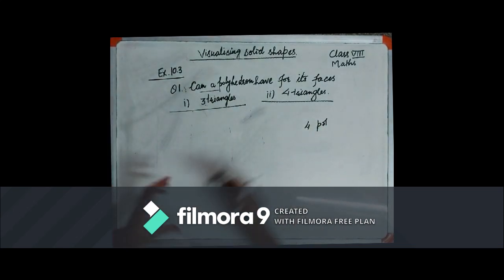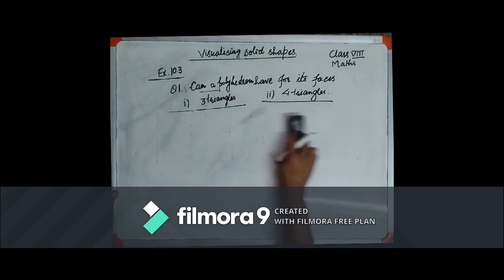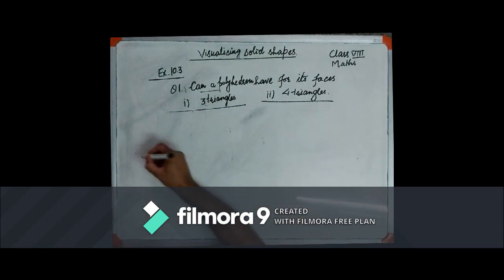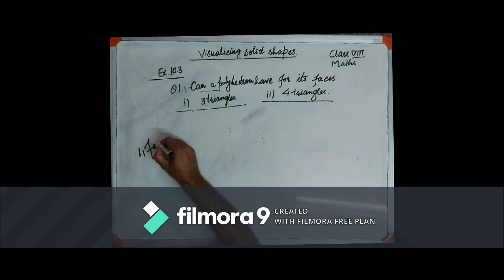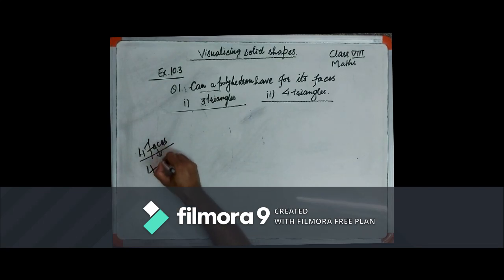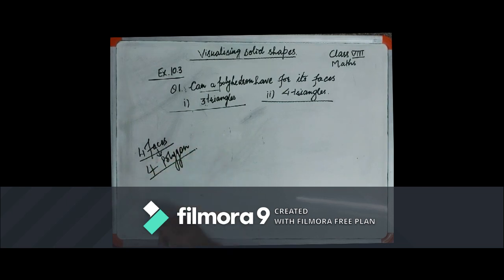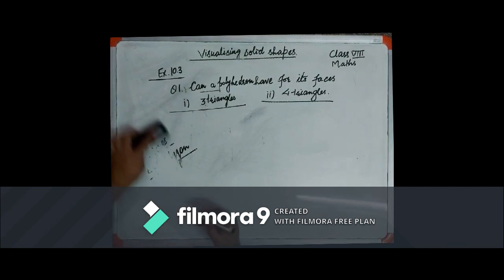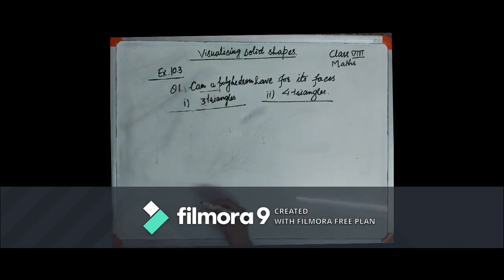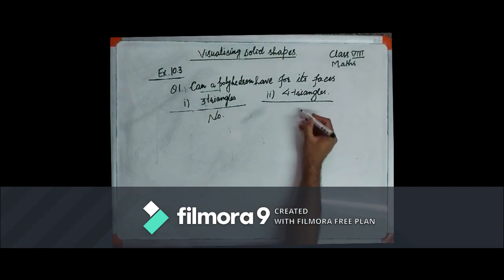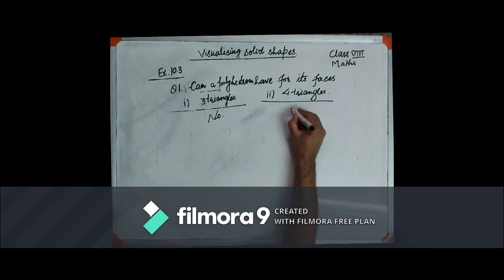First of all, we must understand that to create any polyhedron, we must have at least four faces — four polygons. Four polygons can create at least one polyhedron. So the answer for the first part is no, whereas for the second part it is yes.